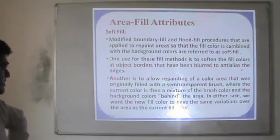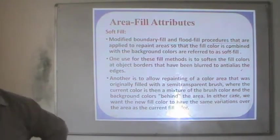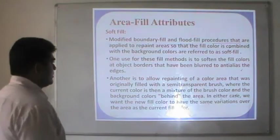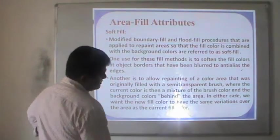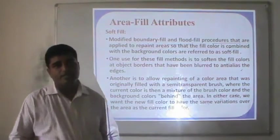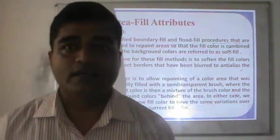Combining fill pattern with background pattern using simple replacement methods. In the case of solid fill, modified boundary fill and flood fill procedures are applied to repaint the area so that the fill color is combined with the background colors — this is referred to as soft fill. One use of these fill methods is to fill colors at object borders that have been blurred to anti-alias the edges. Another is to allow repainting of a color area originally filled with a semi-transparent brush, where the current color is a mixture of the brush color and the background colors.